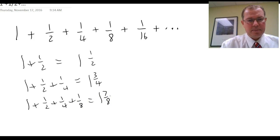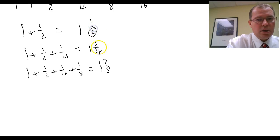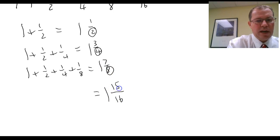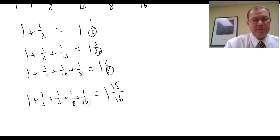She started to spot a pattern, so she now thought, well I wonder if the next answer will be 1 and 15 sixteenths. In other words, she spotted that the denominator was doubling each time, and the numerator was always 1 less. And of course, she was right. 1 plus a half plus a quarter plus an eighth plus a sixteenth is 1 and 15 sixteenths.